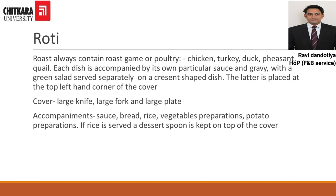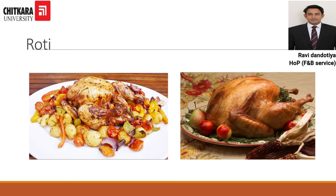The next course is roti, which is also a main course, but it includes only roast preparations of poultry and game birds such as chicken, turkey, duck, pheasant, and quail. An important accompaniment is always a roast gravy. The cover for this course is a large knife, large fork, and large plate. Other accompaniments include sauce, bread, rice, vegetable preparations, and potato preparations. On screen you can see roast chicken and roast turkey served as roti course dishes.